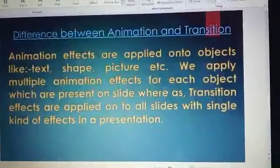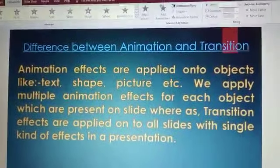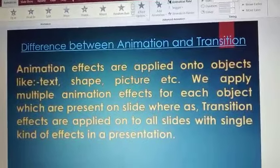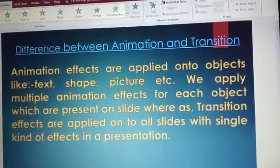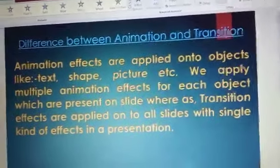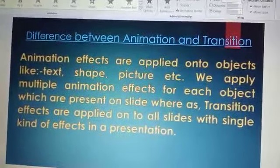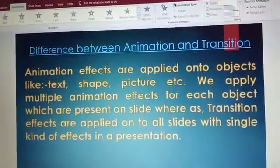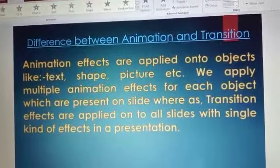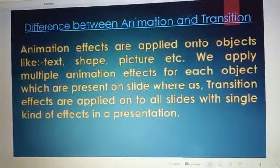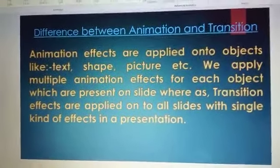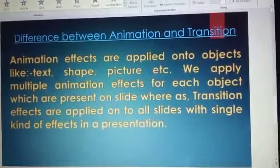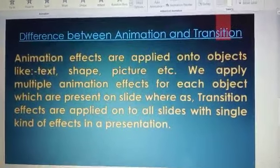A question arises: what is the difference between animation and transition? Animation effects are applied onto objects like text, shapes, pictures, etc. — whatever we draw on the slide. On each line, shape, or text, we can apply animation. But transition effects are applied on a particular slide or group of slides. Animation effects work inside the slide content, but slide transition is the effect to change one slide into another — that is the main difference.